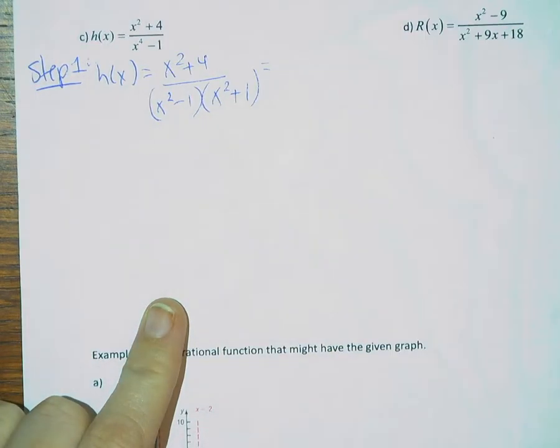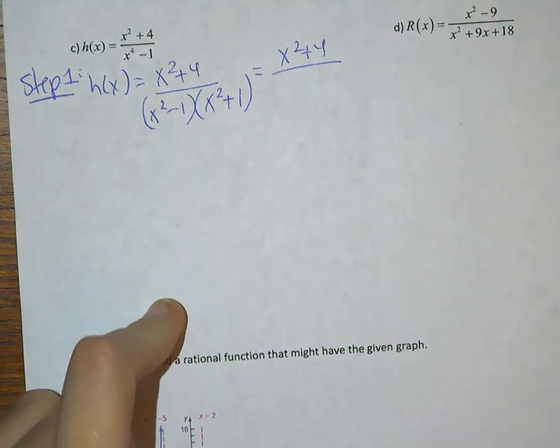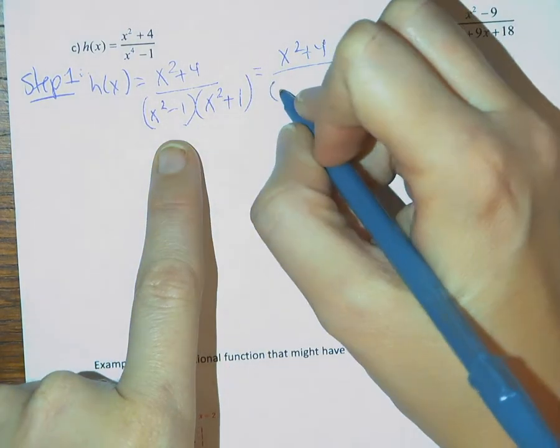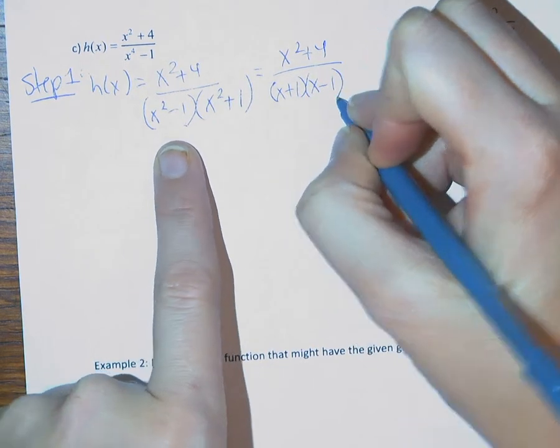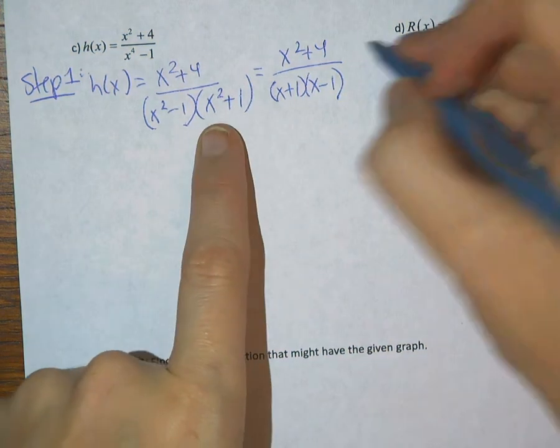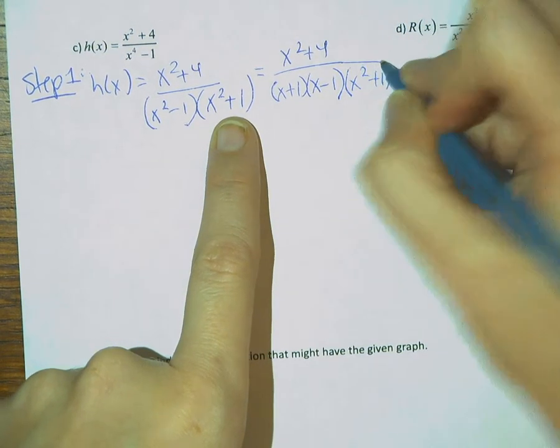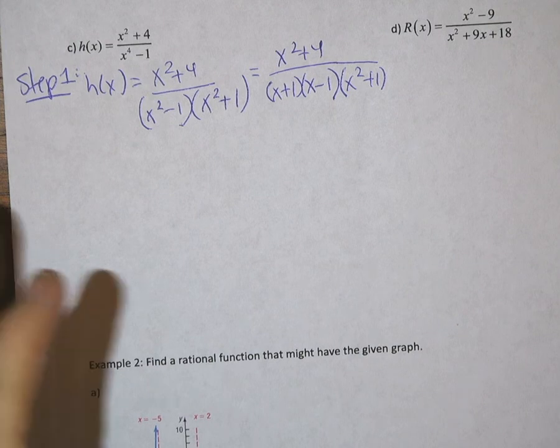So we can write this as x squared minus 1 and x squared plus 1. We however can continue here, right? Again we know the numerator is not factorable, but x squared minus 1 is still factorable. So we can continue this and turn this into x plus 1 and x minus 1, difference of squares again. x squared plus 1 however is not factorable, so that one remains as it is. Okay, fully factored rational function.